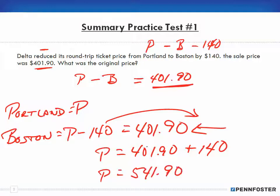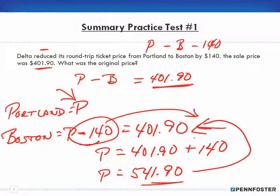So that means P would equal $540. And that makes sense because think about it: if Portland is the full price, and then we're subtracting $140, that means the answer that we get has to be greater than the $490. Okay, so that was relatively easy. Move on to the next one.